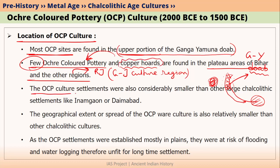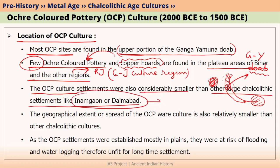If we talk about the size of these OCP culture sites, they were very small compared to other large Chalcolithic settlements like Inamgaon or Daimabad, which were towns in the Jorwae Chalcolithic culture. Compared to these, OCP culture settlements were very small. Why were these small?